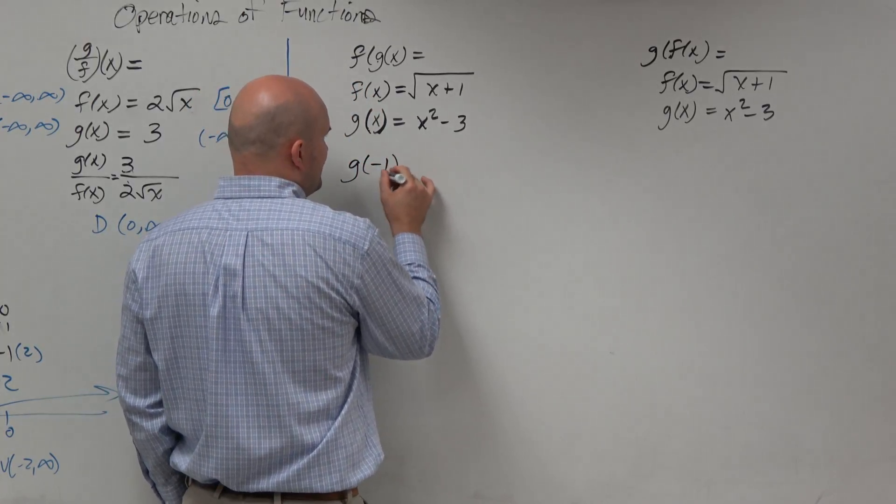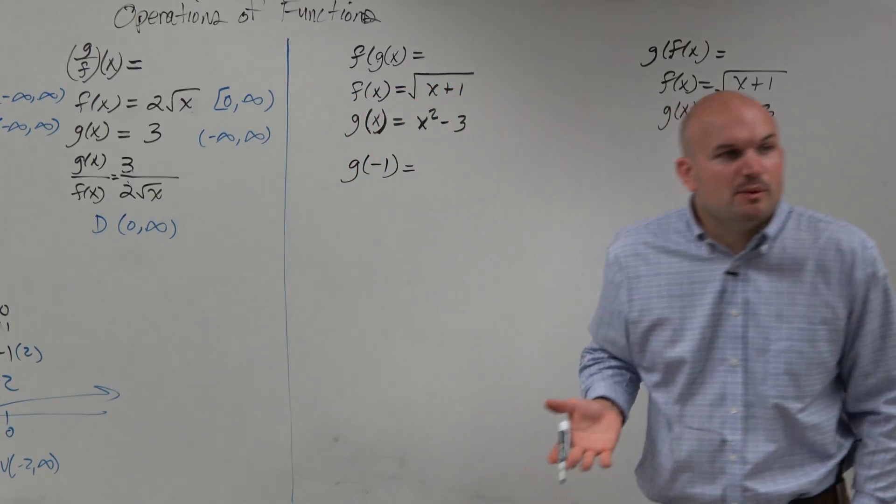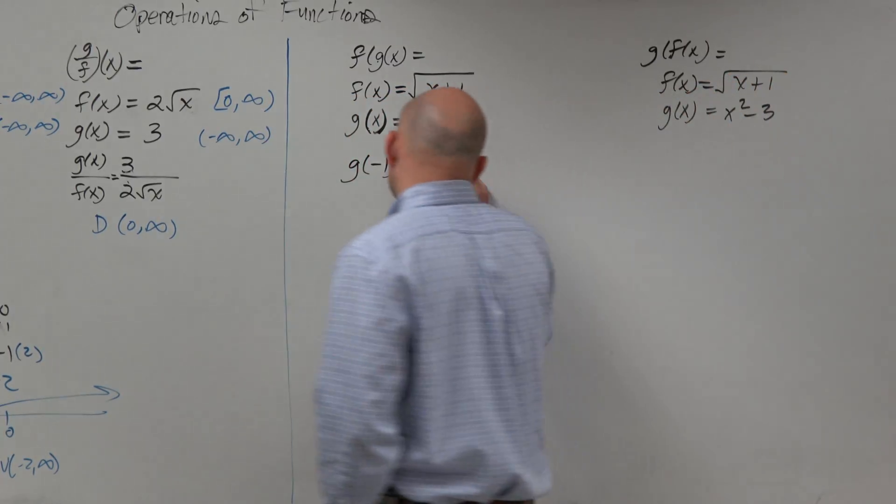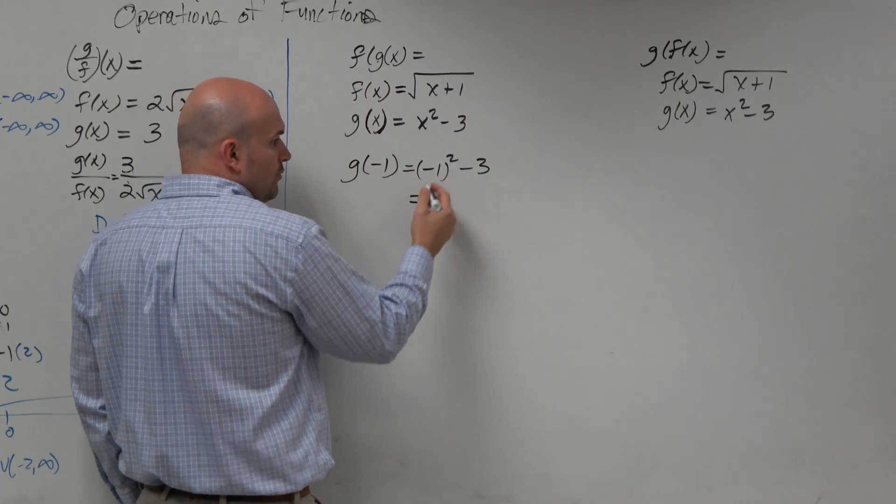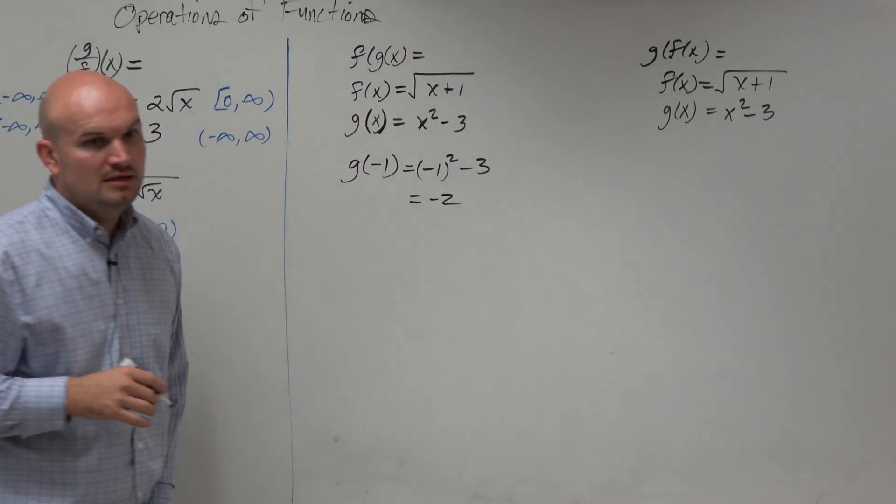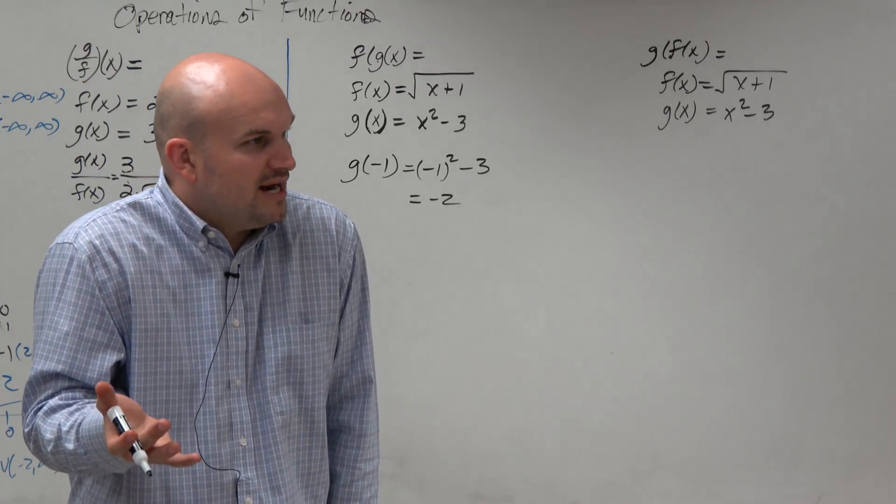Like, for instance, evaluate g of negative 1. Because in algebra 1, you guys did this. In algebra 2, you guys did this. You just plug the number in and then you find the value. Negative 1 squared is 1, 1 minus 3 is negative 2. Right? And that's all you guys practice doing in algebra 1.